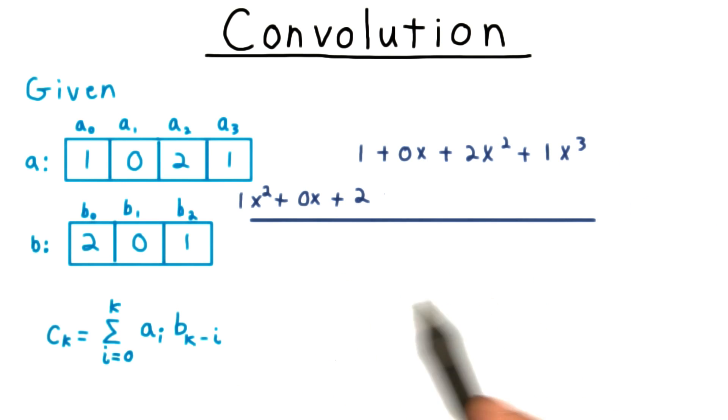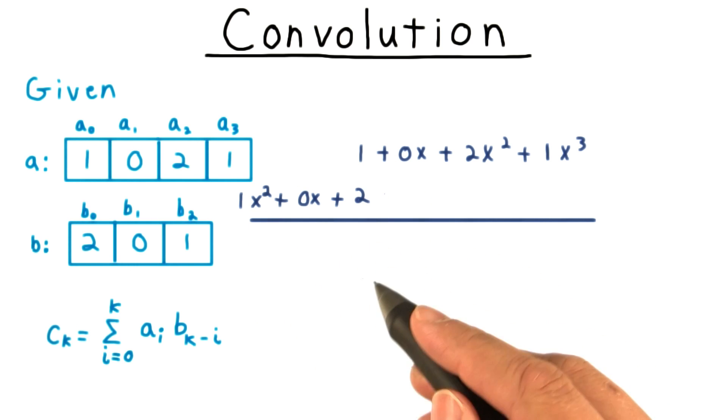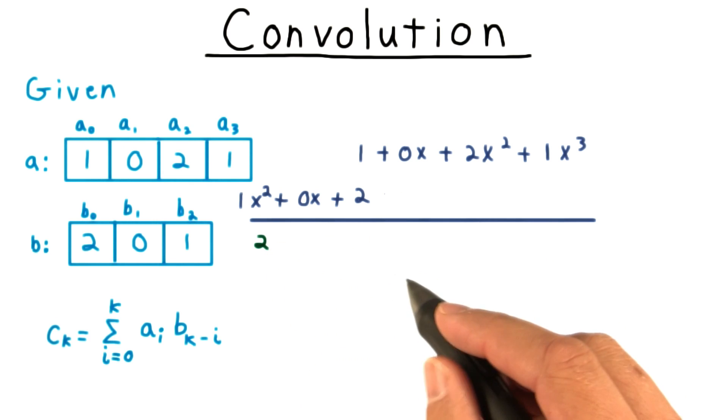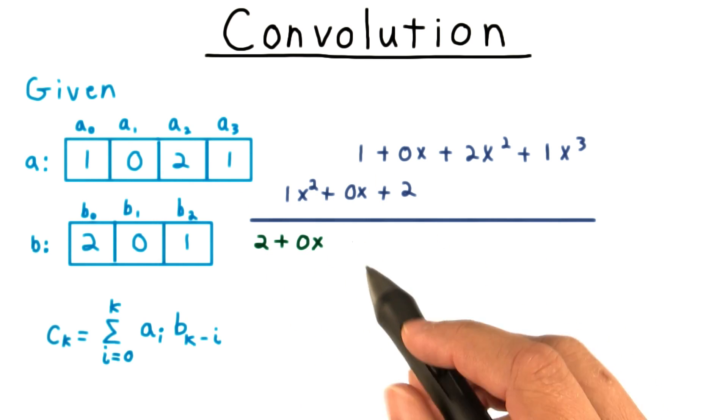In fact, we can easily repeat the example we just did, but in the context of polynomial multiplication. First, I line things up so that we get the constant terms, and that product is 2. Then we line them up so that we get the linear terms, 0 times x.